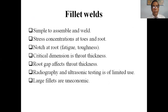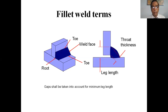Fillet joints are simple to assemble and weld. There is stress concentration at toes and roots, and a notch at the root affects fatigue and toughness. The critical dimension is throat thickness. Root gap affects throat thickness. Gaps shall be taken into account for minimum leg length.